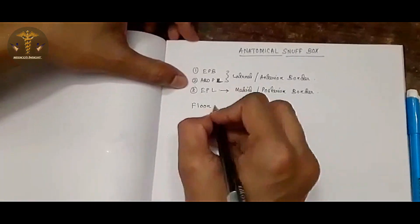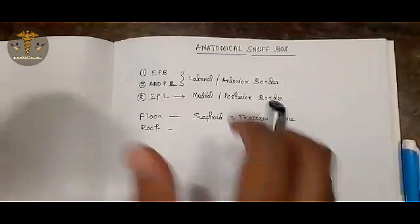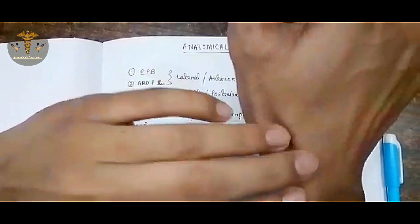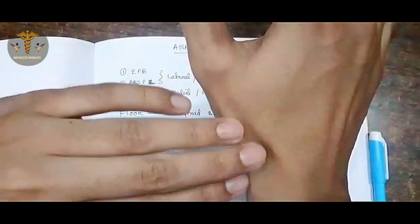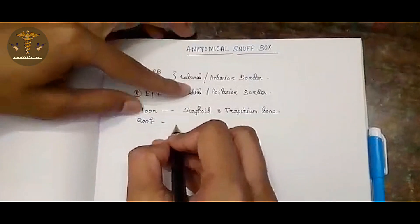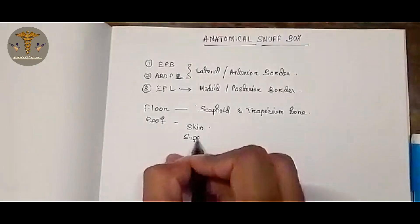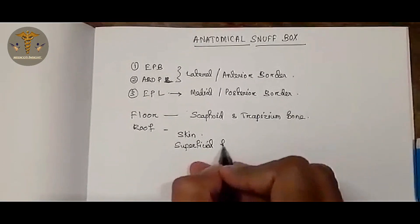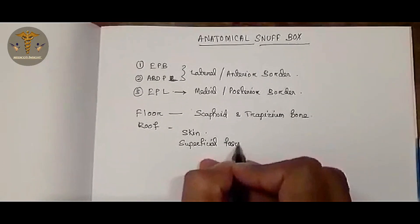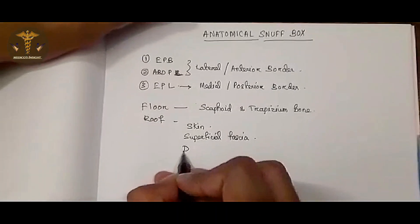The floor is formed by the scaphoid bone. Beneath the skin there is superficial fascia, and beneath the superficial fascia there is deep fascia. So the roof is formed by skin and superficial fascia, with deep fascia beneath.